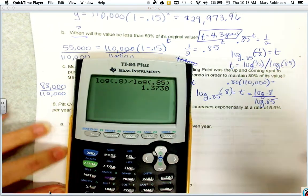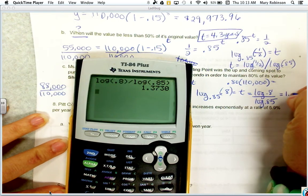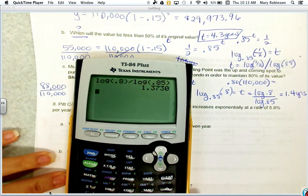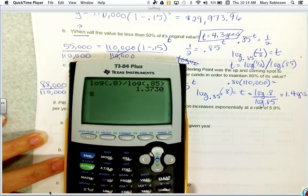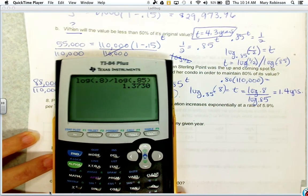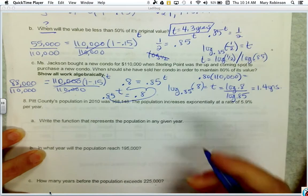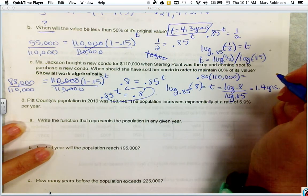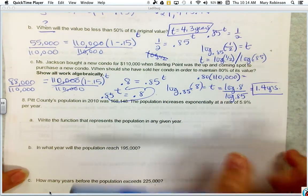And we get 1 point - let's round to the tenths place again - 1.4 years. She wouldn't be able to keep her property very long then. So those are our answers for problem seven.